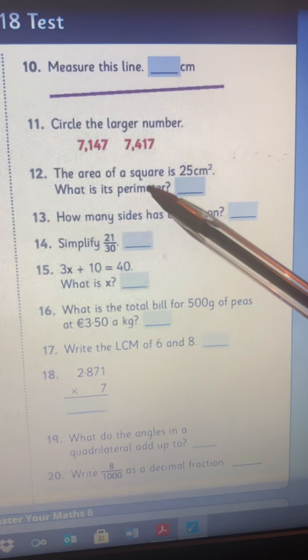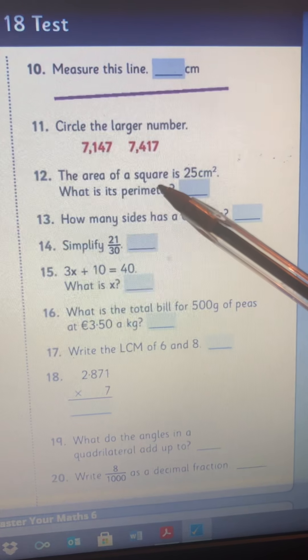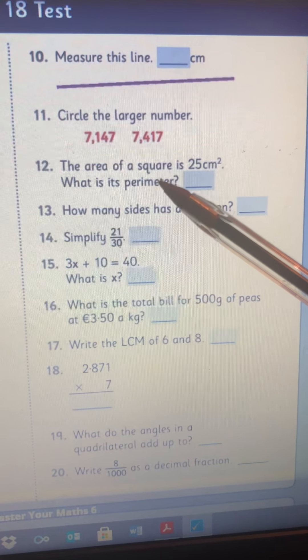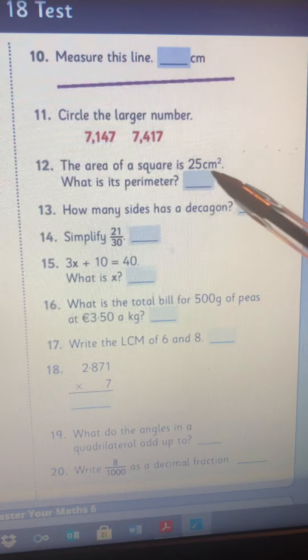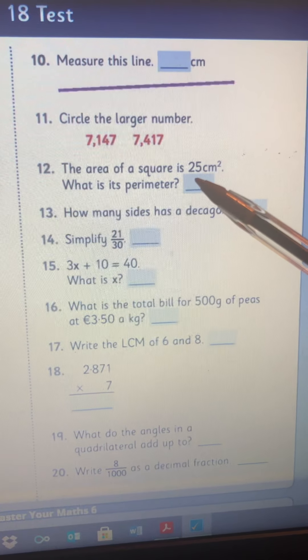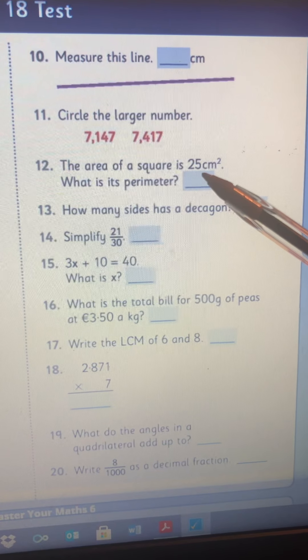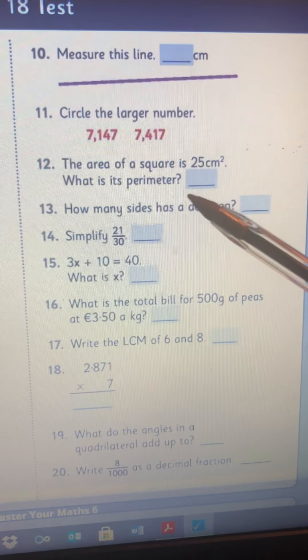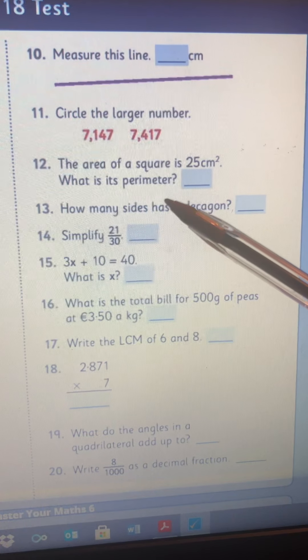So you know to get the area of a square, you multiply the length by the width. You also know a square, all its sides are equal. So the same number multiplied by itself gives you 25. So when you've figured that out, you'll be able to add all the sides because all the sides of a square are the same.